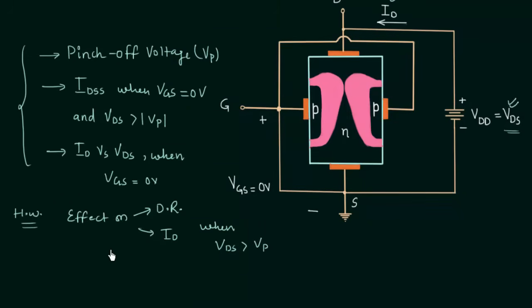First we will discuss the effect on the depletion region. We know what the pinch-off voltage is, and we know why the depletion region increases more at the top and less at the bottom. Now we will understand what happens to the depletion region if we increase VDS beyond the pinch-off voltage.